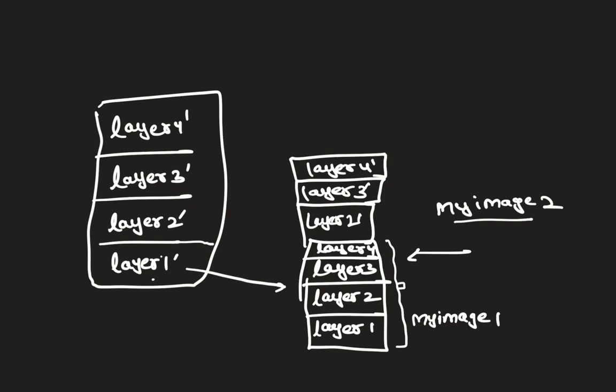This is the concept of reusability of layers. Every layer is given a unique ID, and Docker checks whether that particular layer already exists on your local system — or whatever system where you are trying to pull the Docker image. If that layer already exists, it will not be downloaded again. Only those layers which do not already exist on your system will be downloaded when you run the docker pull command. This is how the reusability and stacking of layers works in a Docker environment. Docker optimizes your Docker image using the concept of layers and reusability, both at build time and pull time.